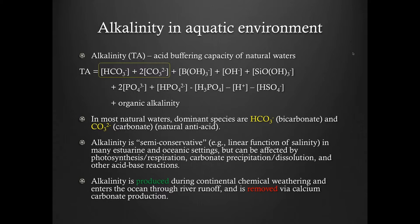Alkalinity is produced during continental chemical weathering because CO2 in the air, when combined with water, can slowly dissolve rocks, turning that into a soluble form and then transporting it via rivers into the ocean. Finally, alkalinity in the ocean can be removed by calcium carbonate production.